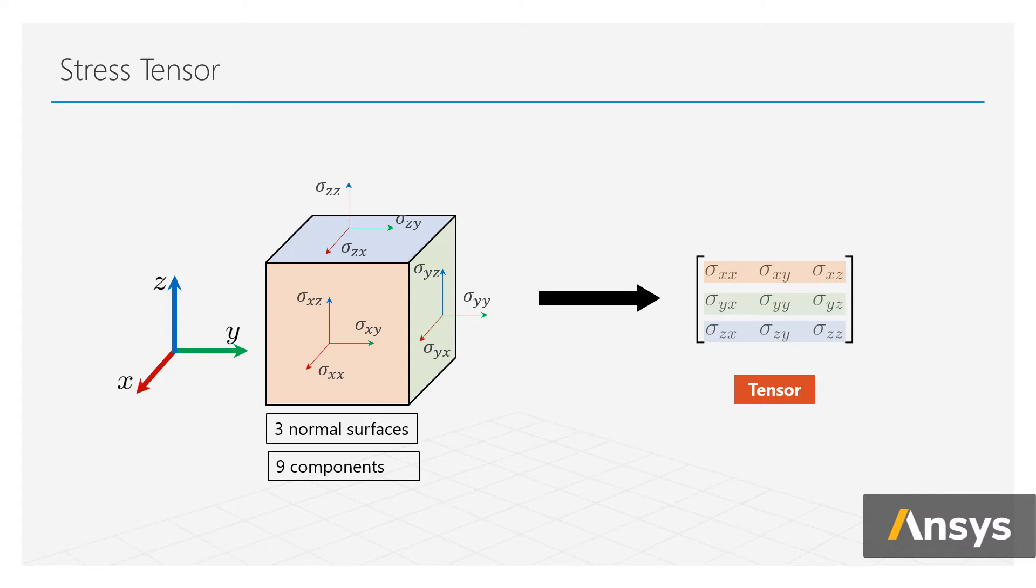Each component of the stress tensor corresponds to a load condition. The three diagonal ones are normal stresses representing uniaxial load condition in normal direction x, y, and z. The off-diagonal components are all shear stresses representing shear load.